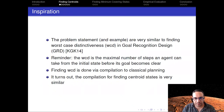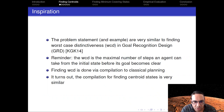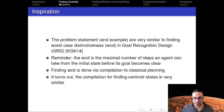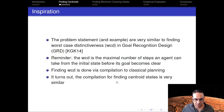When I first saw this paper, and especially this example, it reminded me of the work we did on worst-case distinctiveness in goal recognition design, which was Sarah Karen's PhD thesis. The worst-case distinctiveness is the maximal number of steps that an agent can take from the initial state before its goal becomes clear. This is very similar, and the way we solve worst-case distinctiveness is by compilation to classical planning — and basically the same compilation also works for finding centroid states.